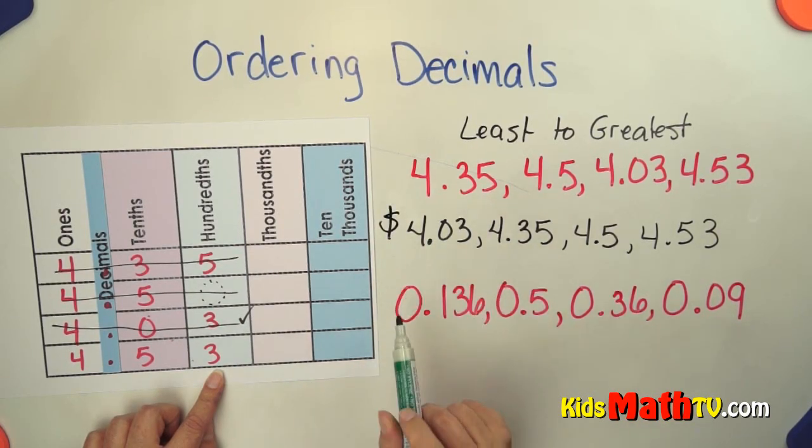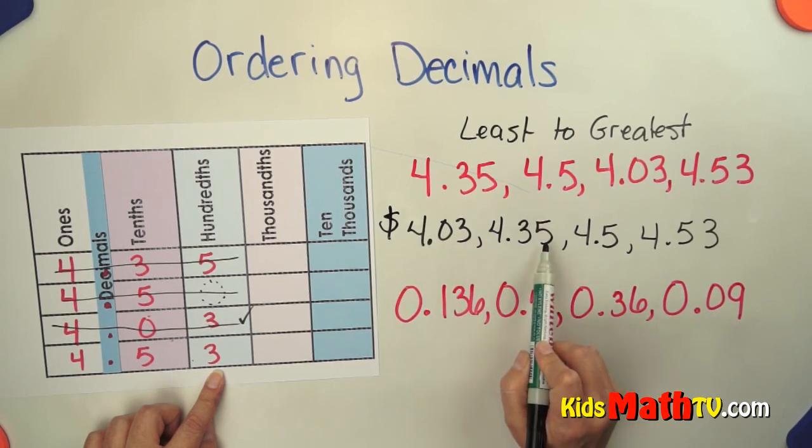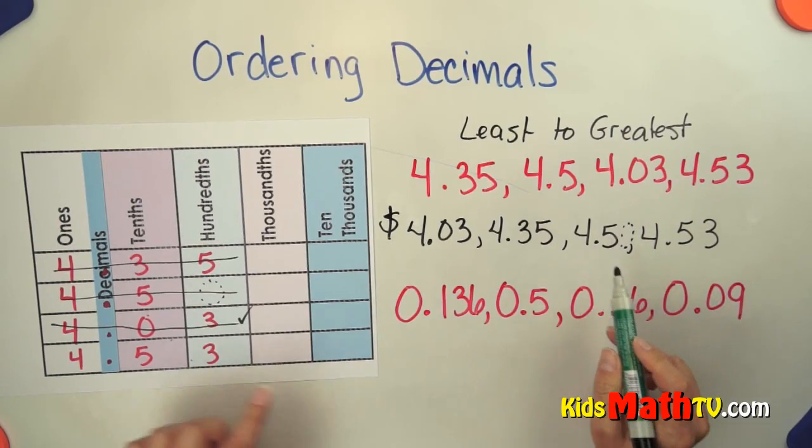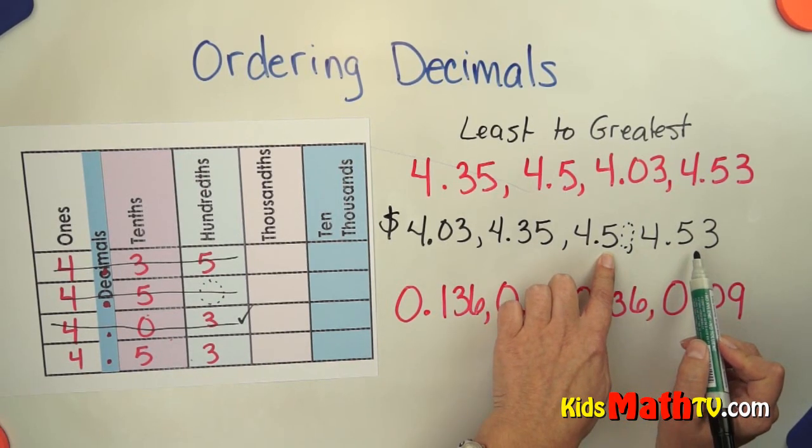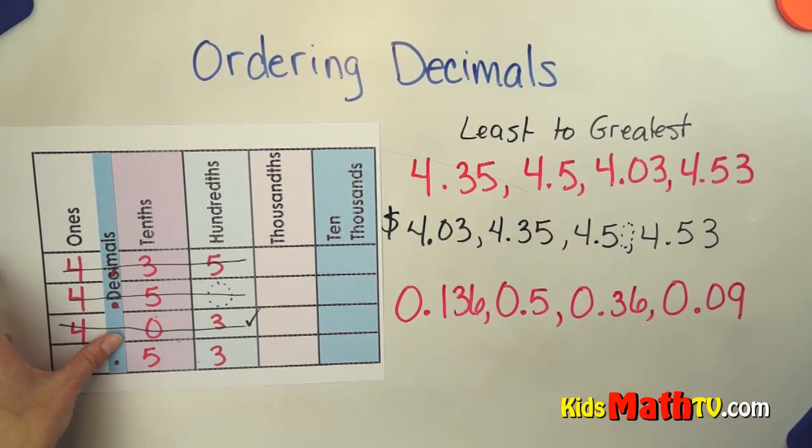I like to check thinking about money. If I were to put a dollar sign in front of all these, this would be 4 dollars and 3 cents. That's less than 4 dollars and 35 cents. This would be 4 dollars and 50 cents. That's bigger. And 4 dollars and 53 cents is the largest. So it's one way to check your work.